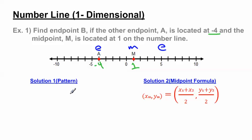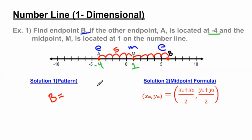That's where the pattern method comes in. We need to find a pattern between A and M. I know the distance from A to M is going to be the same distance from M to B, because M is in the middle of those two points. The distance from A to M is 1, 2, 3, 4, 5. Applying that same pattern from M to B — 1, 2, 3, 4, 5 — B has got to be right here. We know that B is located at 6 on the number line. The pattern of 5 is the same from M to B, so this has to be the right answer.